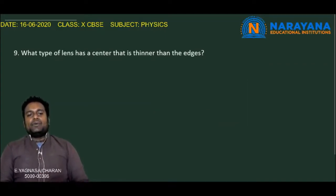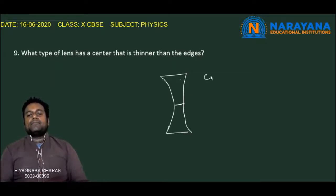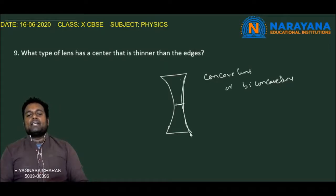The ninth question: What type of lens has a centre that is thinner than the edges? A lens that is thin at the centre but thick at the edges is named a concave lens or biconcave lens. In a concave or biconcave lens, the thickness at the centre is less compared to the edges — it is thinner at the centre and thicker at the edges. So this lens is a concave lens.